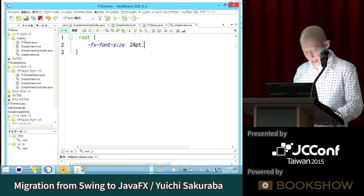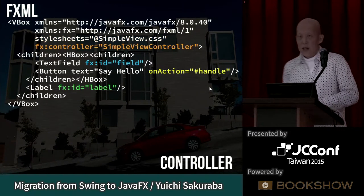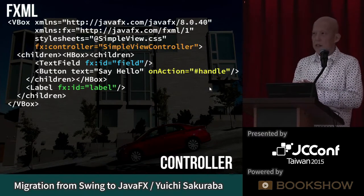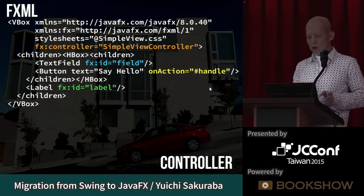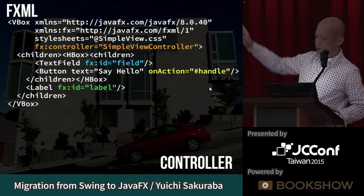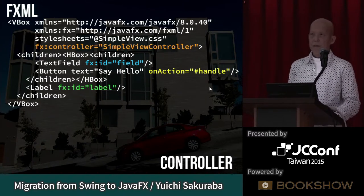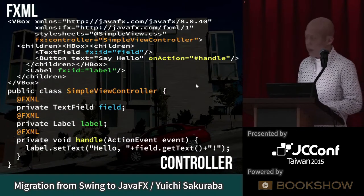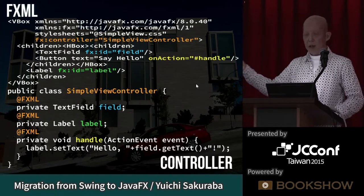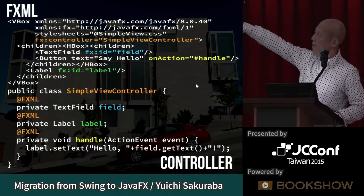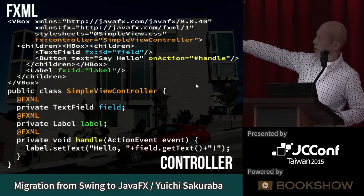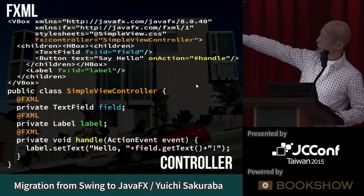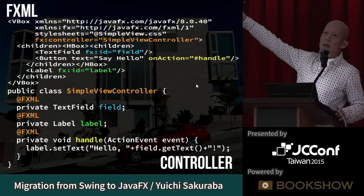Now I add an event handler. To add event processing, I need to bind controller class fields to FXML elements. The fx:id attribute binds to the controller class. The controller class adds the @FXML annotation, and fields with the same name as the fx:id are automatically injected. The green field is for the text field, another green field is for the label. I also set on-action on the button — on-action means the button click handler, set to '#handle'.